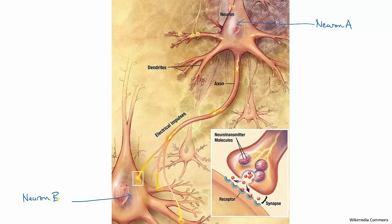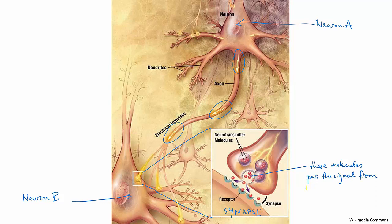When neuron A receives a signal, that signal is transmitted as an electrical impulse down the axon of neuron A to its synaptic terminals. The inset diagram here zooms in on that synaptic terminal. The signal causes neurotransmitter molecules to be released from the synaptic terminal. These travel across the short gap to the surface of neuron B. By absorbing the neurotransmitter molecules, neuron B receives the signal, and it then repeats the process to pass the signal on to the next neuron in the chain. Think of the neurotransmitter molecules as like a note being passed from one neuron to the next.